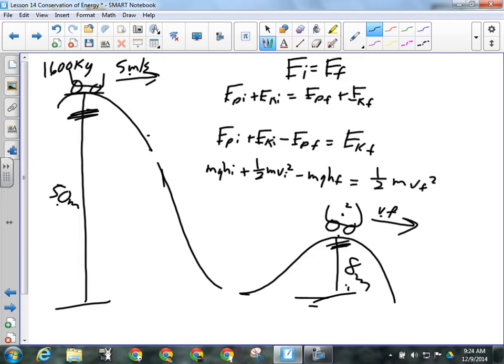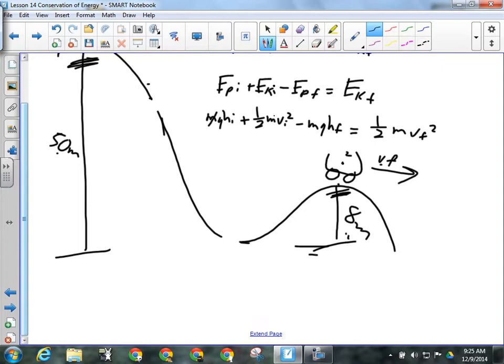So, we got actual numbers for all of these things and we are looking for the final speed. Which one of these things is final speed going to be part of? EKF. So, I can isolate that right now if I want to or I can put in all the formulas right now too. It doesn't really matter. So, I'm going to go EPI plus EKI minus EPF equals EKF. I'm just going to do that before I plug anything in. Now, I'll put in all my formulas. So, M times G times H initial plus 1 half MVI squared minus MGHF. Does everyone follow what I'm doing here so far? I'm just plugging in the formulas for these terms. That equals the final kinetic energy.